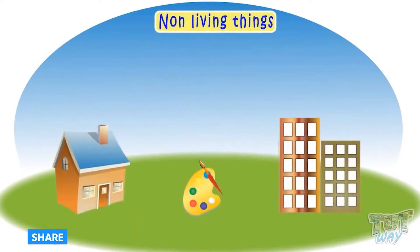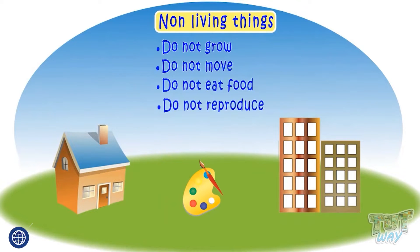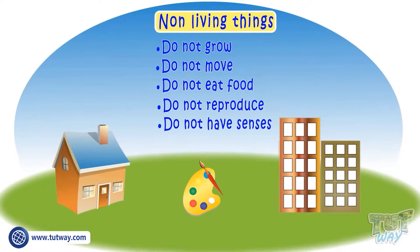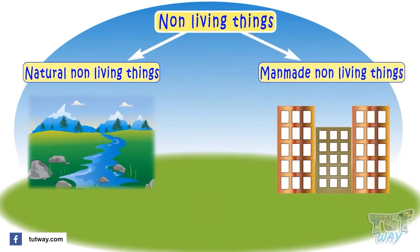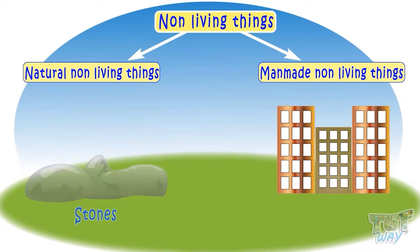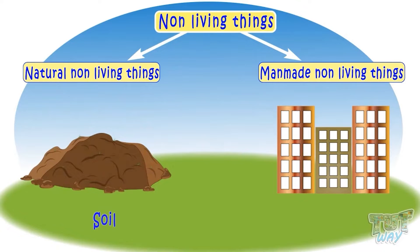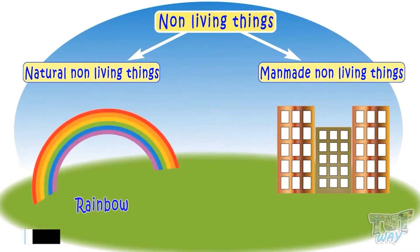Non-living things are those that do not grow, do not move, do not eat, do not reproduce, or have no senses. Non-living things can be natural or man-made. Natural non-living things are things that exist in nature and man has not made them — like stones, water, soil, mountain, river, clouds, and rainbow. All these are non-living things.